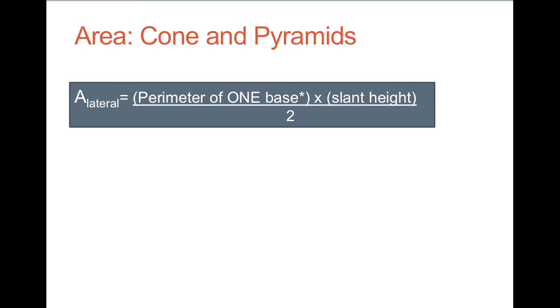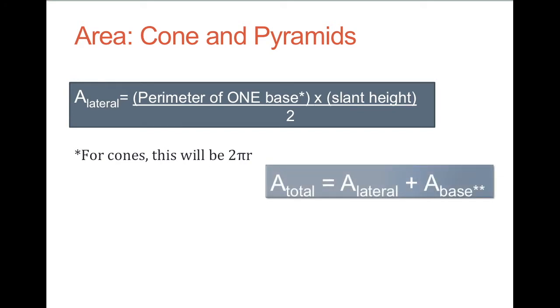This is the general rule for the lateral area of a cone and pyramid. It's the perimeter of one base times the slant height, not the height, the slant height divided by 2. For cones, this would be 2 pi r, because cones have a base of a circle. The lateral area and the area of one base gives you the total area. Cones and pyramids only have 1 base, whereas the prisms had 2.